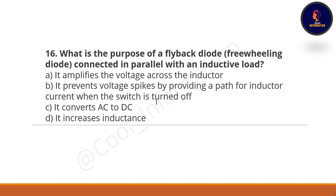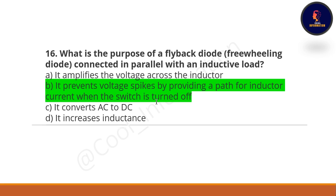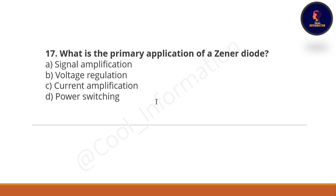Next question: What is the purpose of a flyback diode connected in parallel with an inductive load? Option A: it amplifies the voltage across the inductor. Option B: it prevents voltage spikes by providing a path for inductor current when the switch is turned off. Option C: it converts AC to DC. Option D: it increases inductance. The correct option is option B.